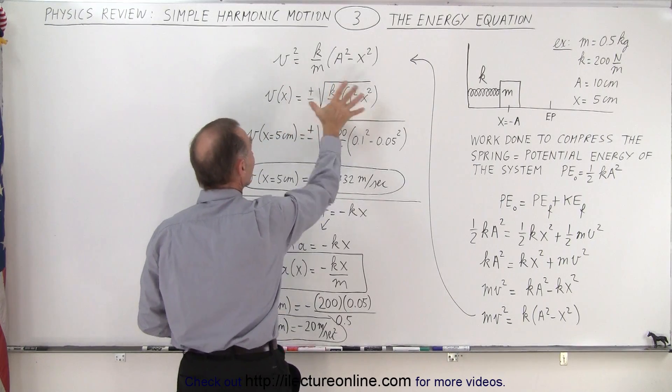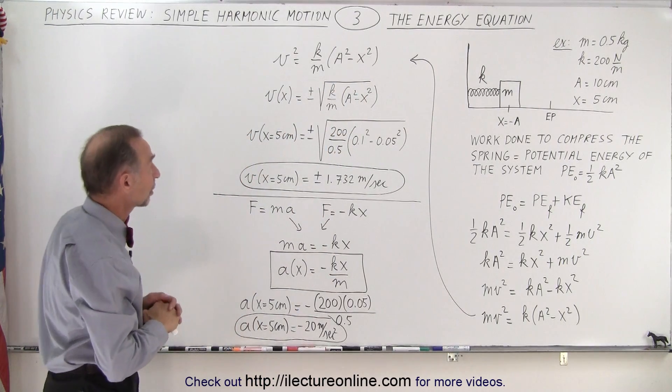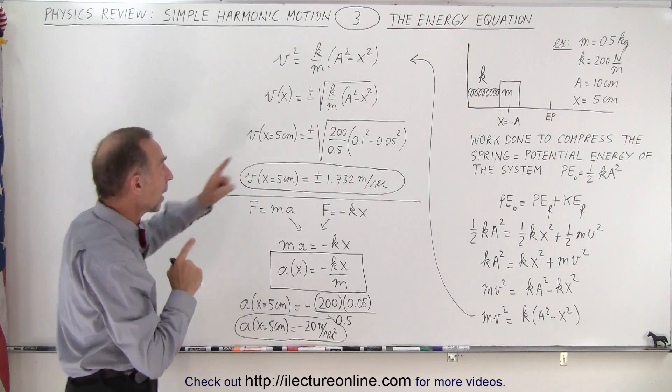v is equal to plus or minus the square root of k over m times a squared minus x squared. Now, why plus or minus?